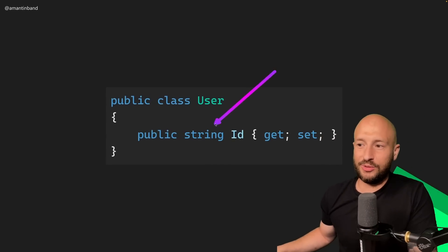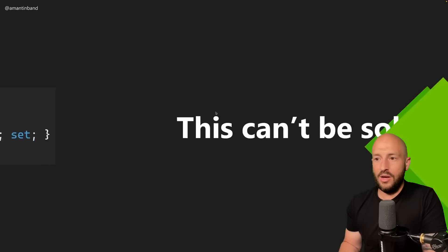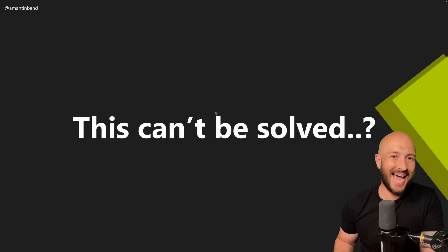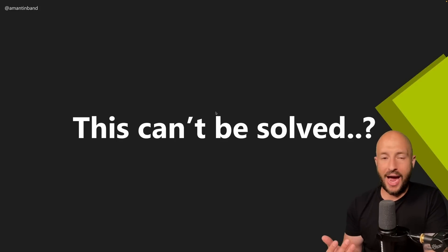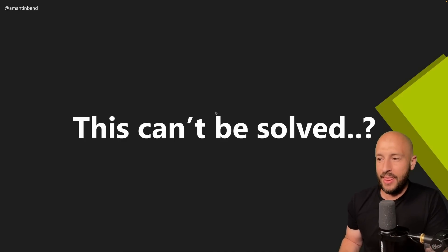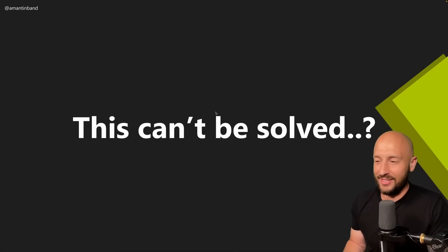The last option is simply reverting back to primitive types. Another common solution is using strongly typed IDs but defining relationships via EF Core rather than referencing other aggregates by ID — but we want to avoid that since we don't want changes to one aggregate to have side effects on other aggregates. So let's take a look at what the underlying problem really is and see if we can do something a bit creative to solve this elegantly — having configurations work as expected without duplicating all our objects, while keeping everything strongly typed.